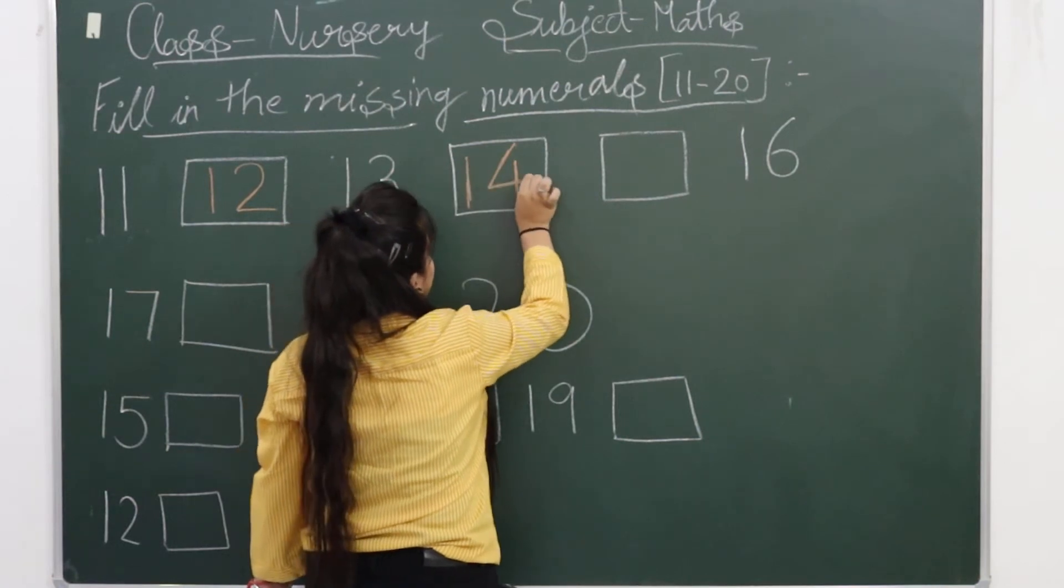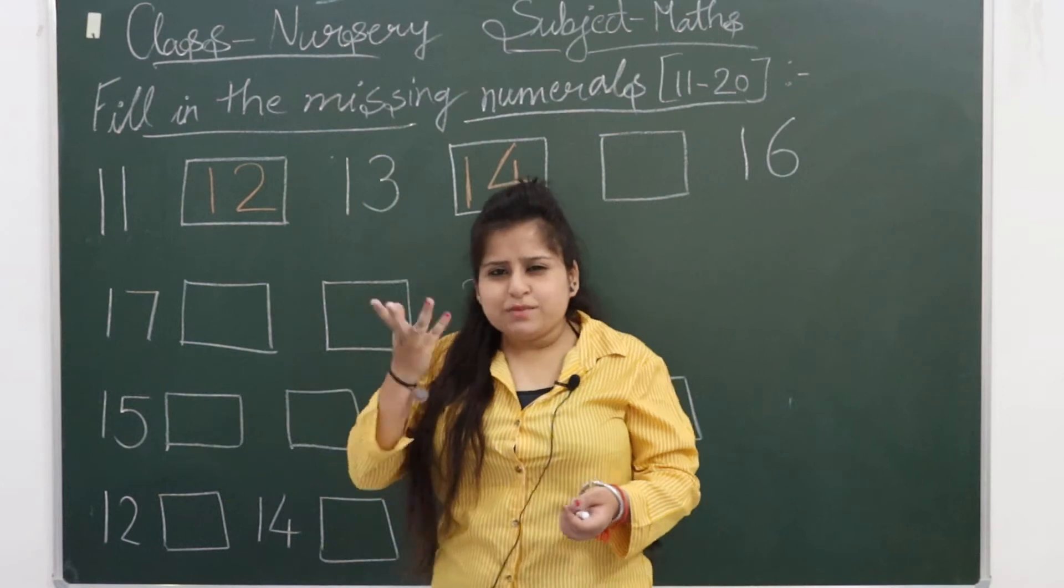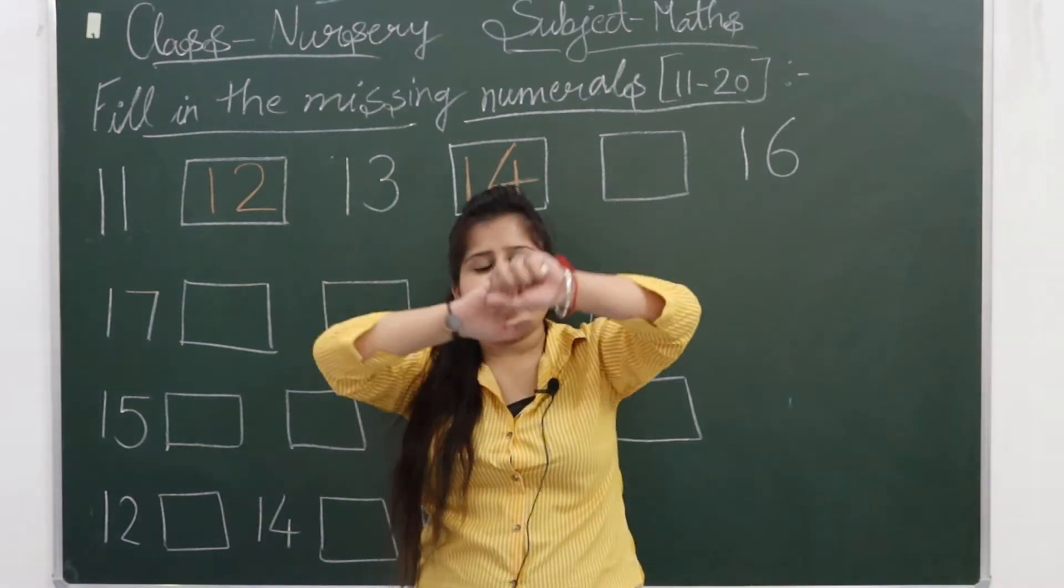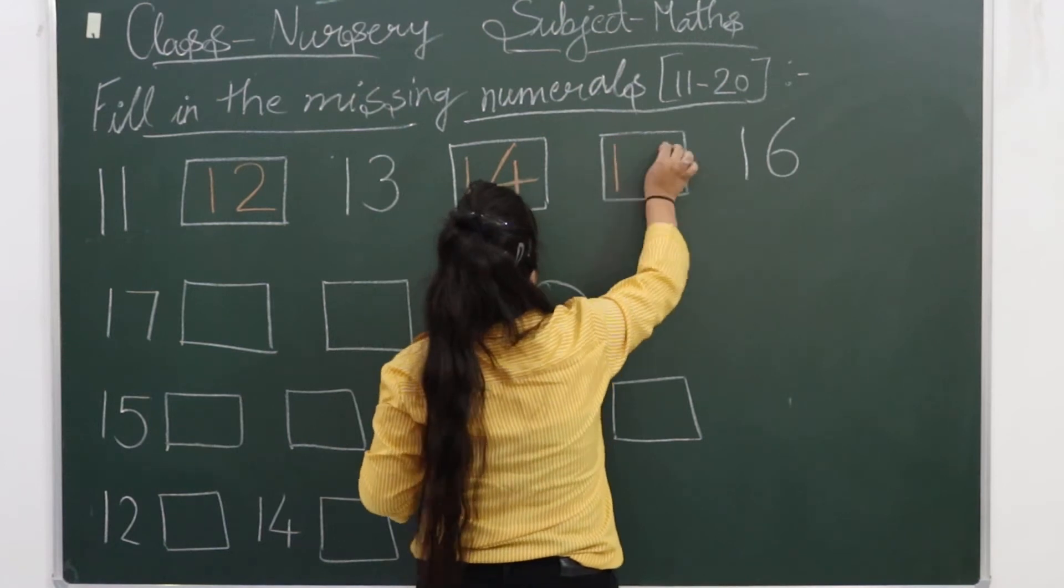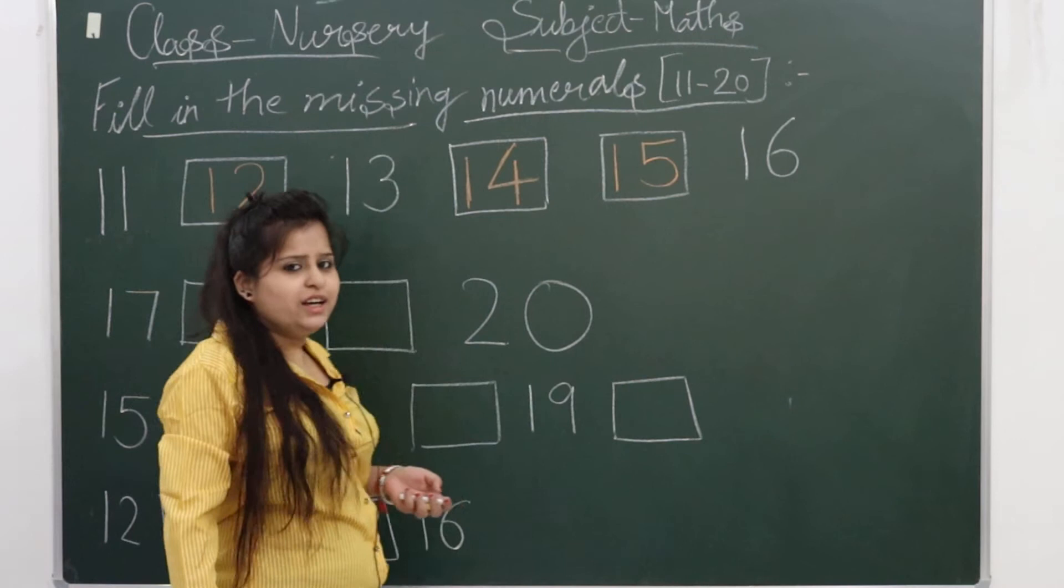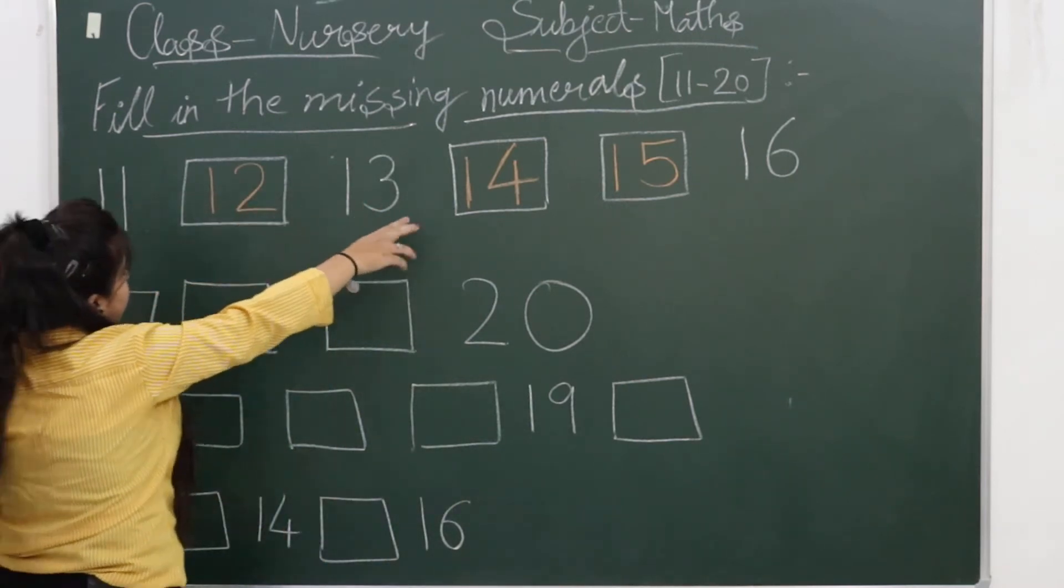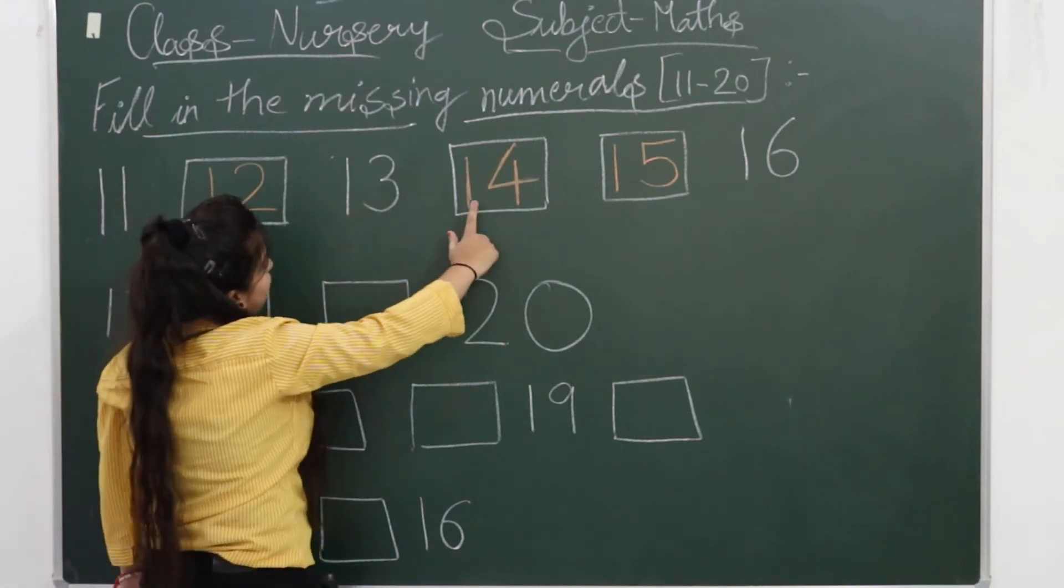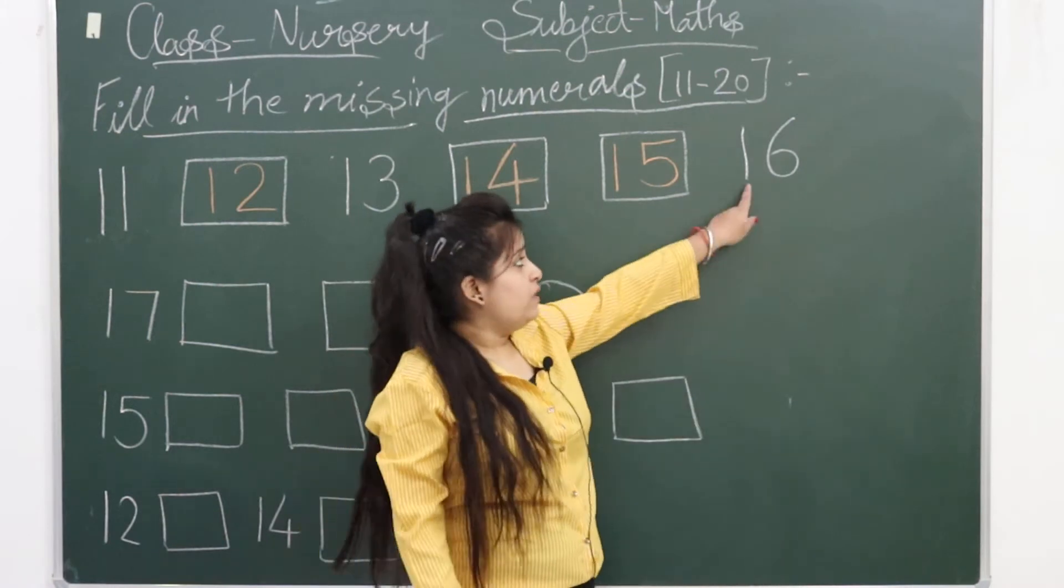So after 1-4 fourteen, what comes? Which child can tell ma'am what comes after 1-4 fourteen? Yes, 1-5 fifteen. So 1 standing and 1-5 fifteen. Okay, so we are done with the series: 1-1 eleven, 1-2 twelve, 1-3 thirteen, 1-4 fourteen, 1-5 fifteen.